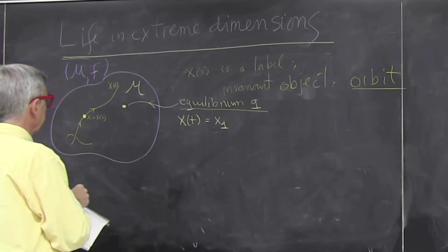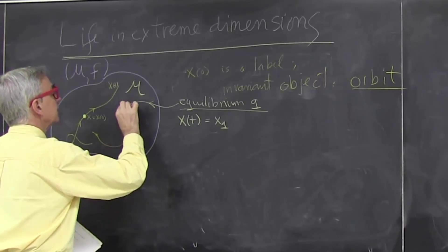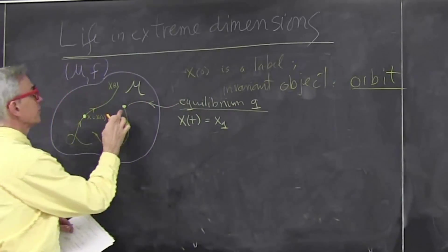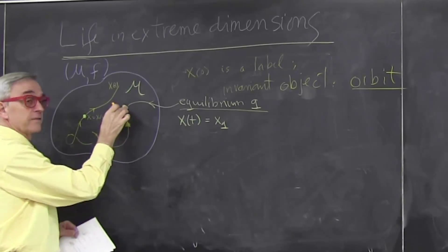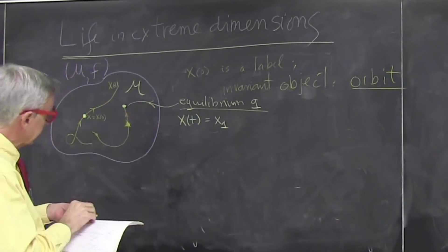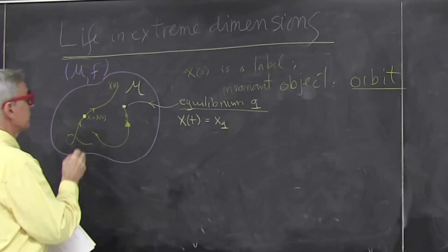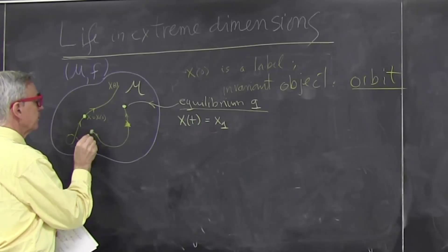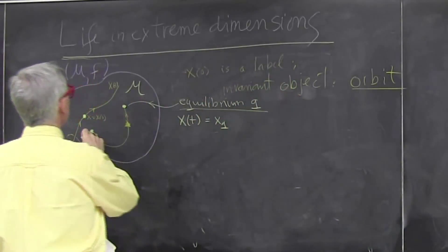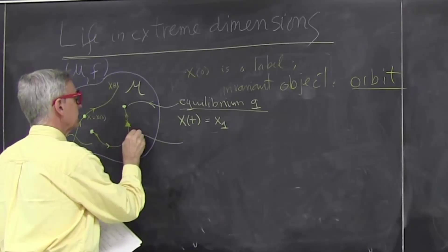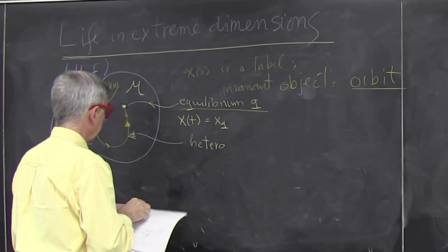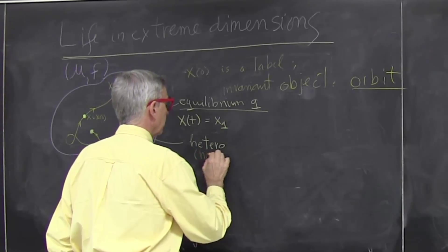Then there could be an orbit that starts here and ends up here. An example of this kind of solution is death — you do all kinds of stuff, and at some point you quiet down and don't do anything anymore; you have reached the equilibrium point. Another kind of state is that maybe you start in the neighborhood of an equilibrium point and end up someplace else. That's called heteroclinic. Or sometimes if you start at the same point and come back to the same point, it's called a homoclinic orbit.